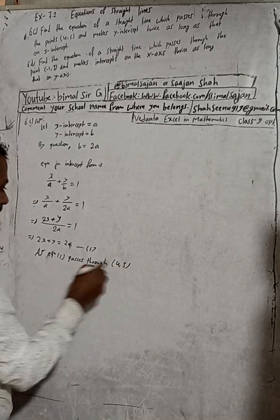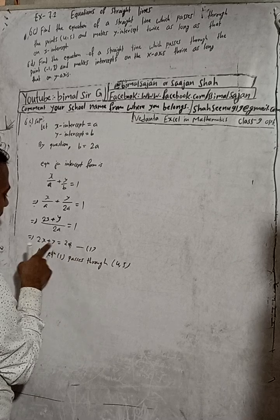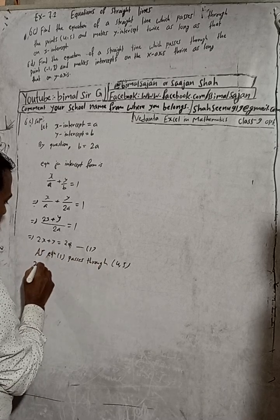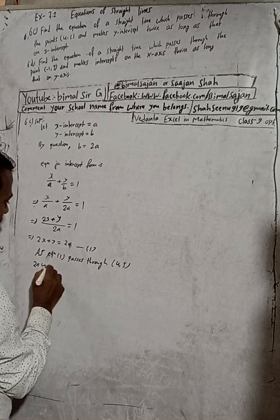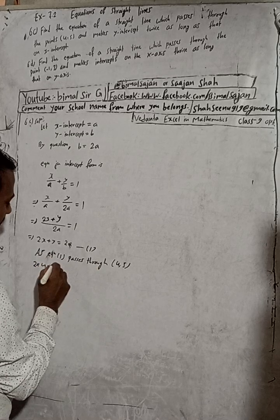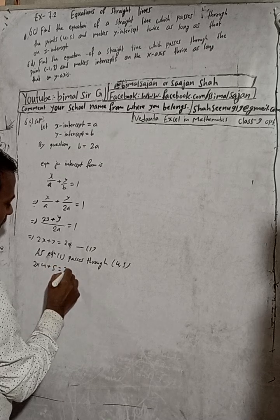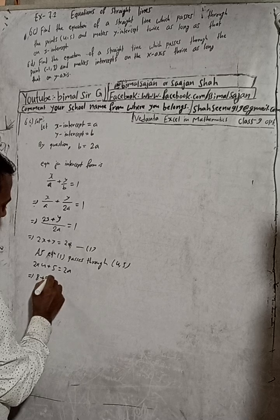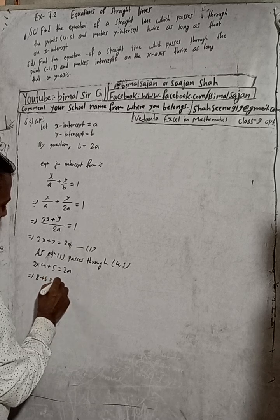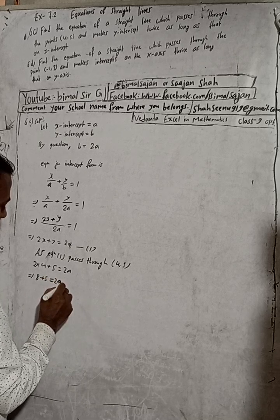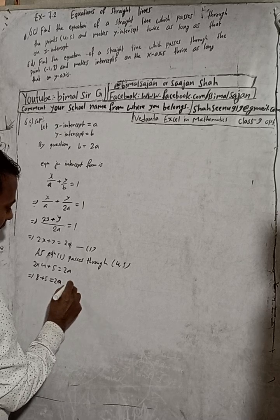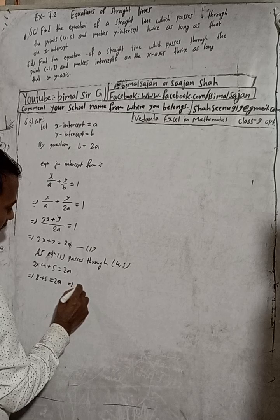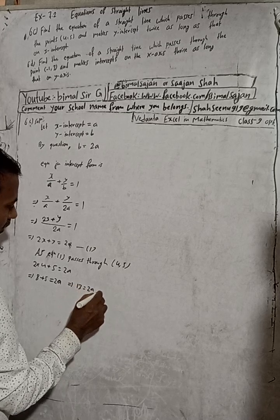So in place of x in this, put 4, and in place of y put 5. So this will be now 2 into x value of 4, plus y value of 5 is equal to 2a. This implies 4 times 2, 8 plus 5 is equal to 2a. This implies 8 plus 5 is 13, 13 is equal to 2a.